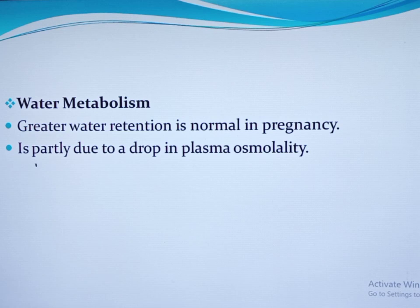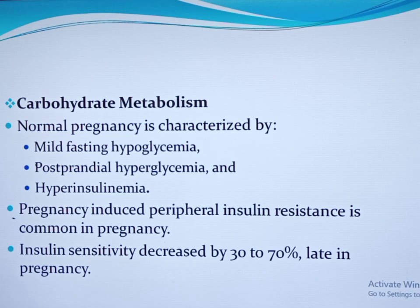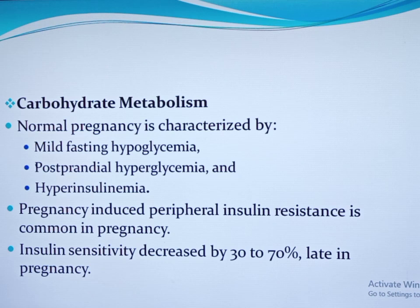Regarding water metabolism, there is greater water retention in normal pregnancy, partly due to the drop in plasma osmolality. In carbohydrate metabolism, normal pregnancy is characterized by mild fasting hypoglycemia, postprandial hyperglycemia, and hyperinsulinemia. Pregnancy-induced peripheral insulin resistance is common, because of hormonal changes such as estrogen, progesterone, and prolactin — which play an important role in decreased insulin sensitivity — and inflammatory mediators such as tumor necrosis factor alpha and interleukin-6. It is said that insulin sensitivity is decreased by 30 to 70 percent late in pregnancy.